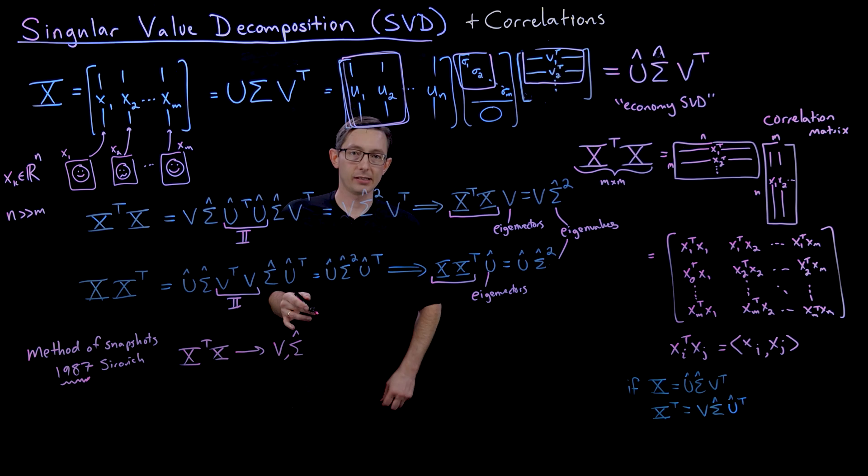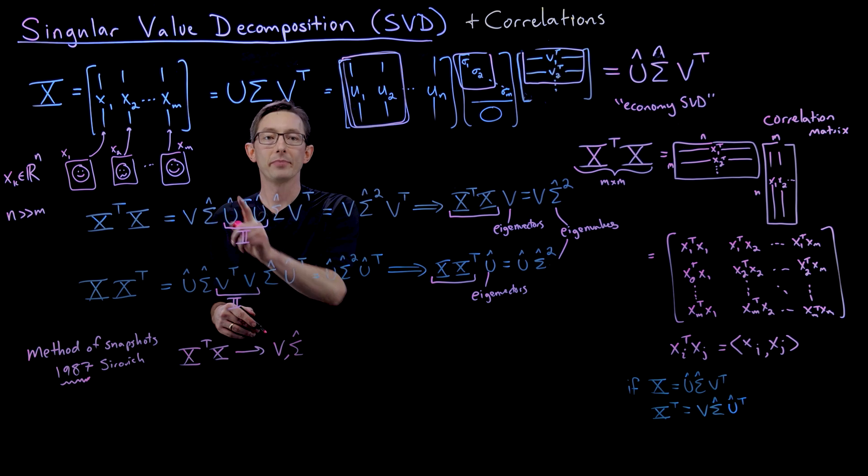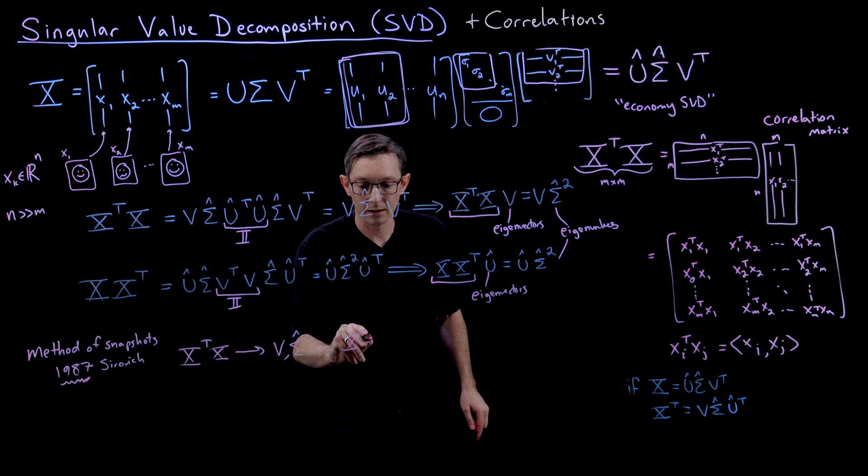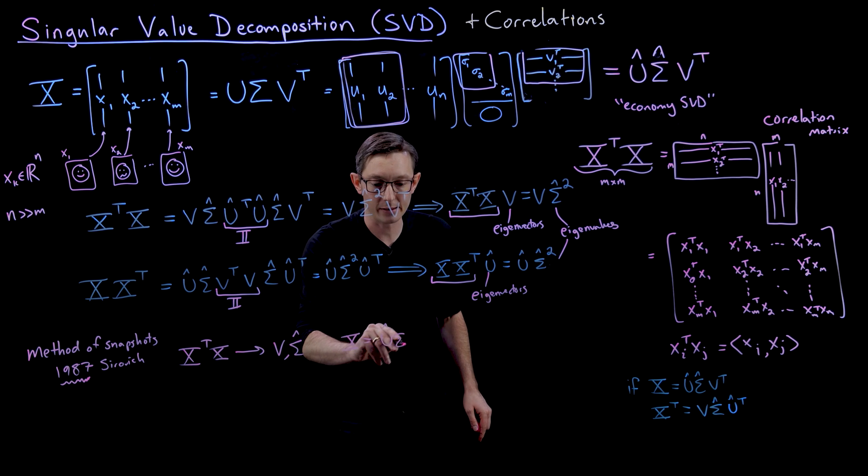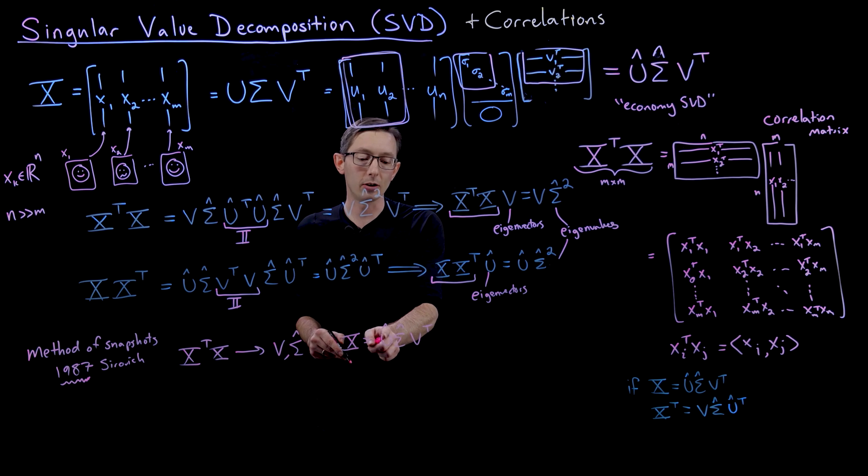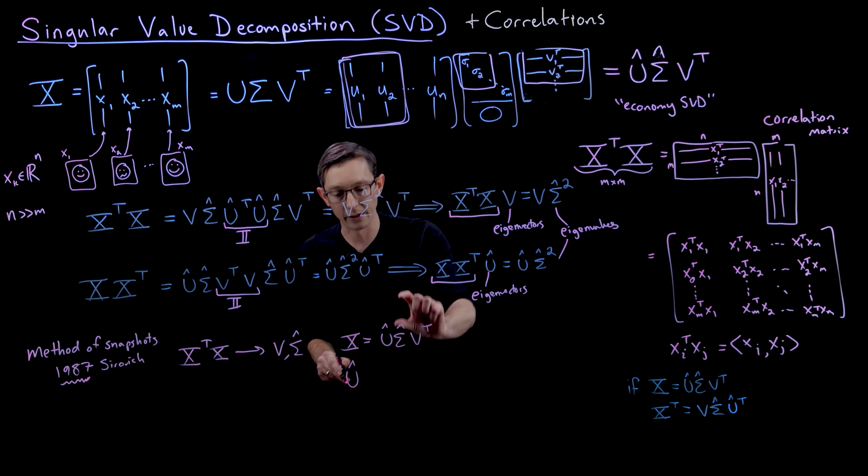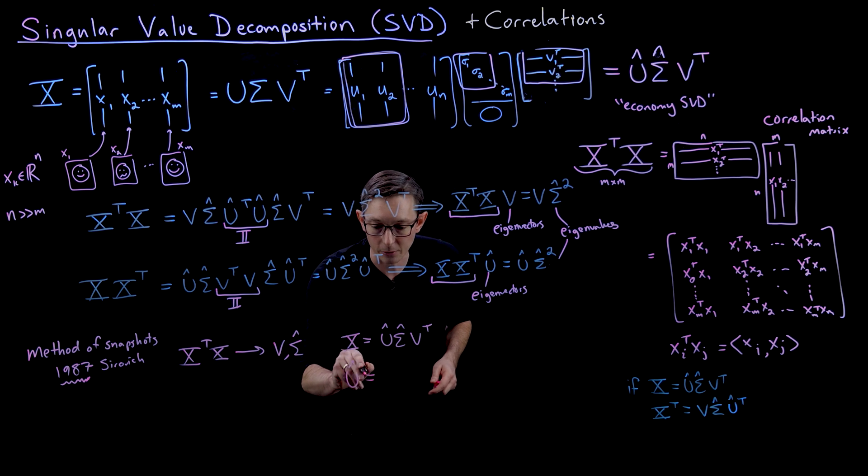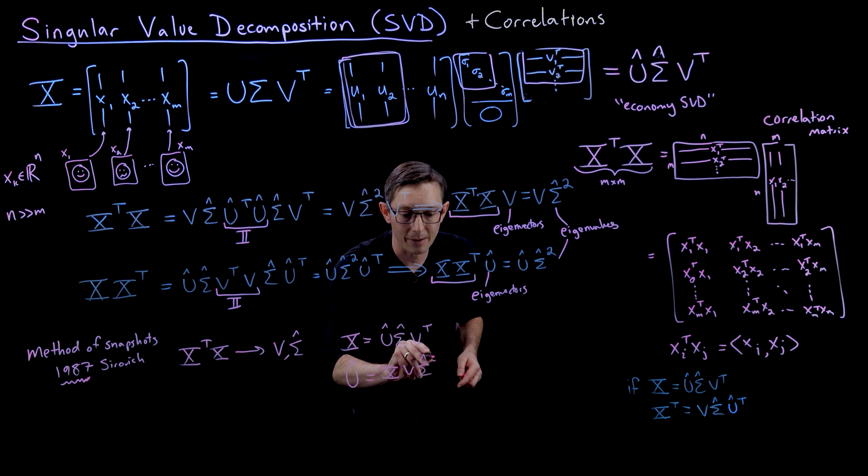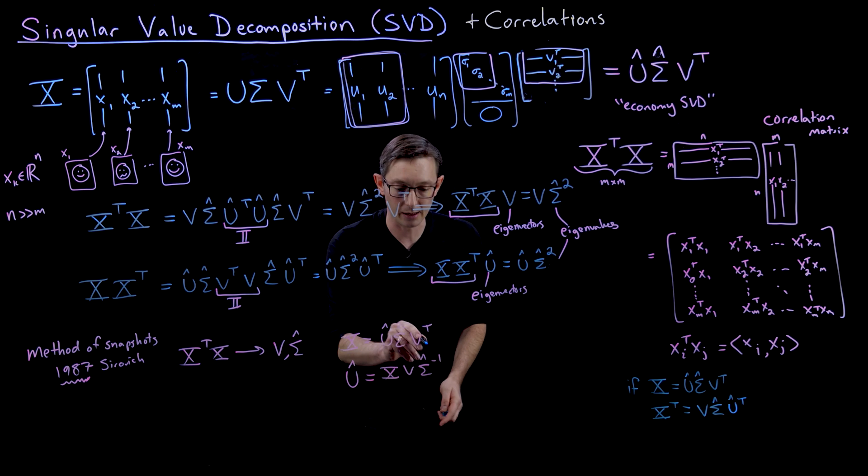Then you can solve for U hat. If you assume that X equals U hat Sigma hat V transpose, you can solve for U hat by inverting the V and then inverting the Sigma hat. So this equals X times V times Sigma hat inverse.